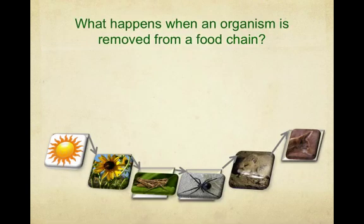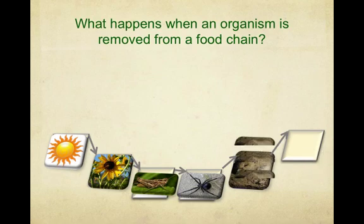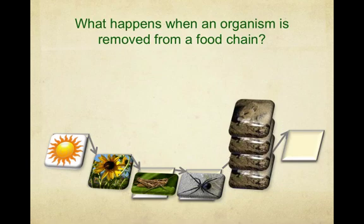So what happens when an organism is removed from a food chain? Let's say a developer comes into our neighborhood and decides to build houses and take away the coyote's habitat. So we're going to remove the coyote completely from this food chain. What would happen to the rest of the organisms? What would happen to the mouse population, the spider population, the grasshopper population, and the plant population? Let's go ahead and take the coyote out. And what happens to the mouse population?